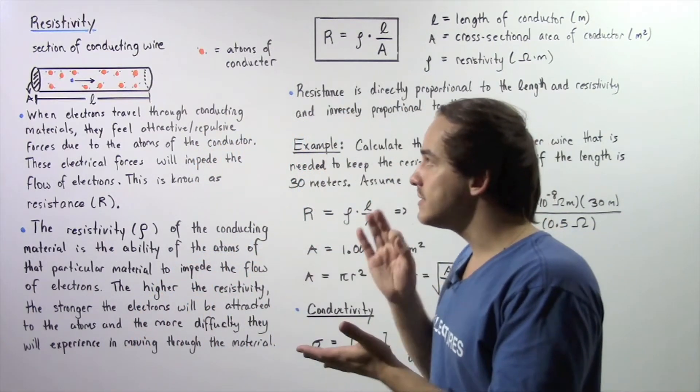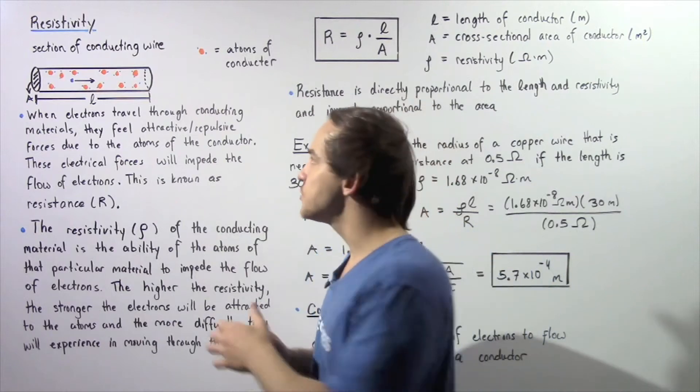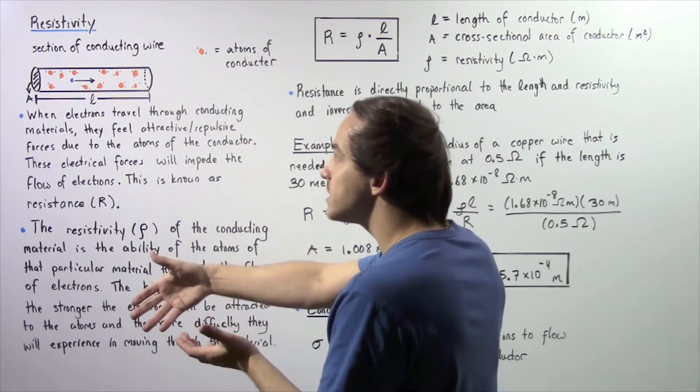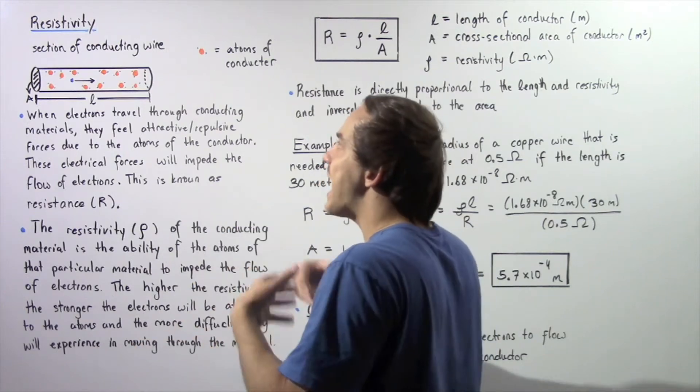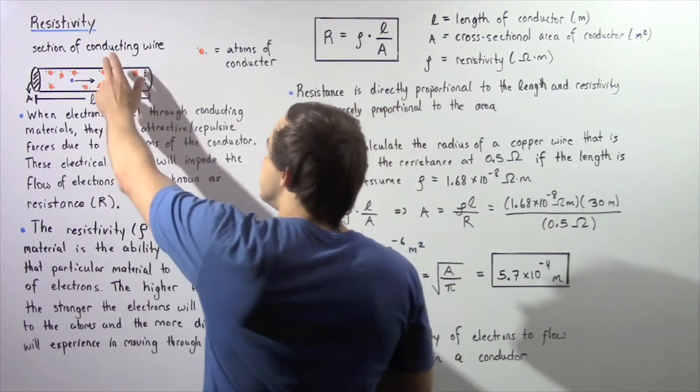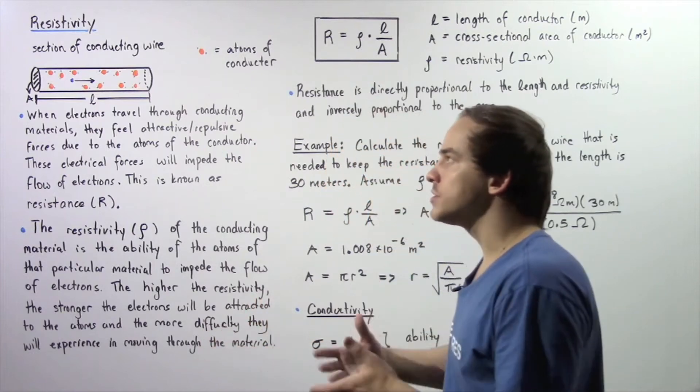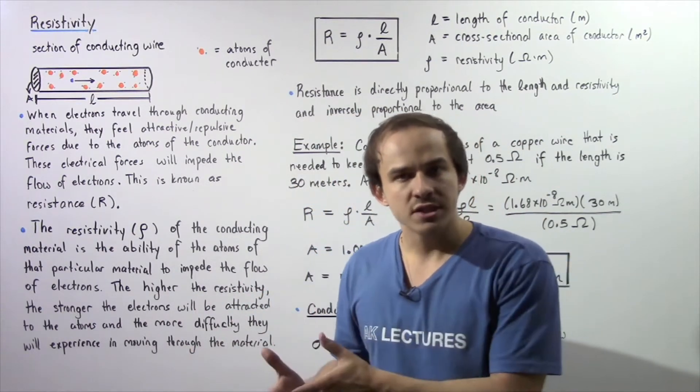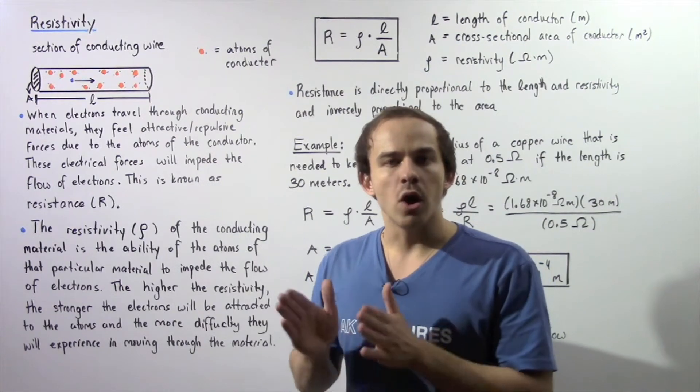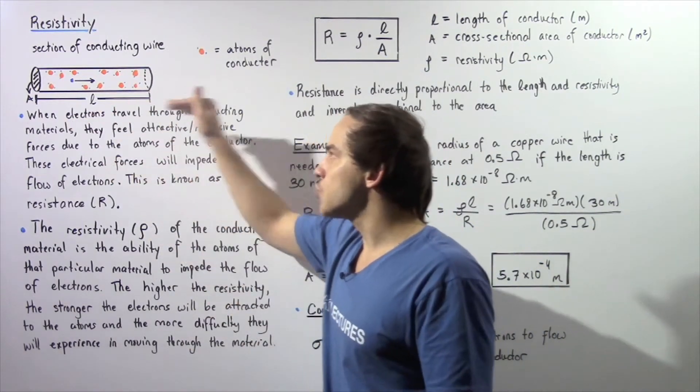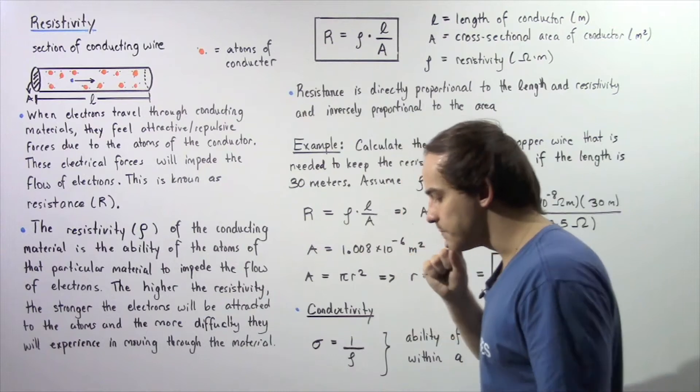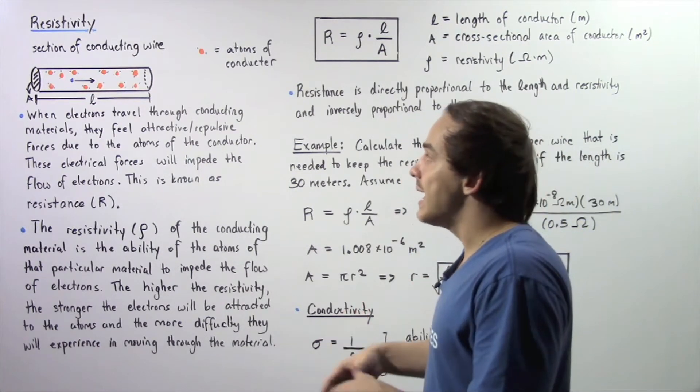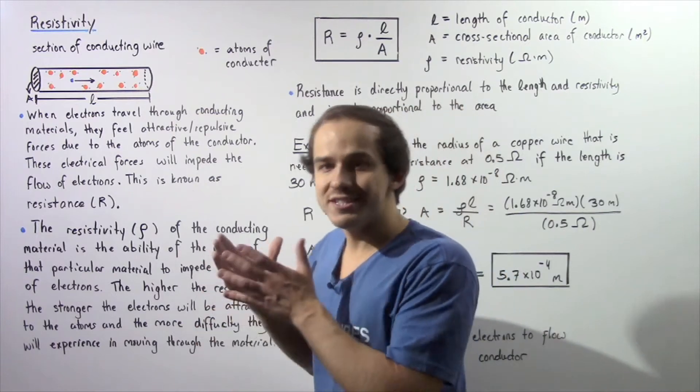However, it does experience difficulty because if this electron gets close to either the protons or the electrons of the atoms composing our conducting wire, attractive and repulsive forces will be felt. These electrical forces will impede the flow of our electron as it travels through our wire. This impeding effect is essentially known as resistance.